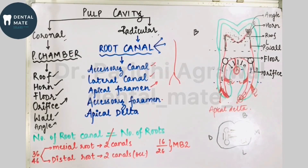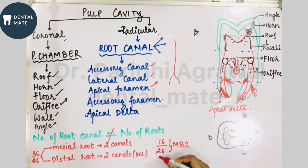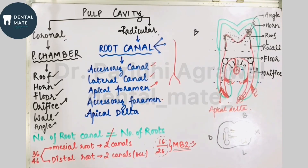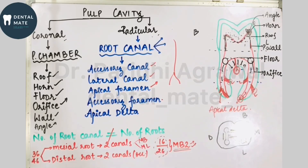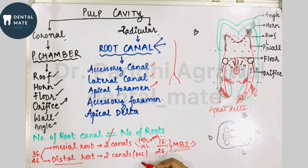Generally, the number of root canals is equivalent to the number of roots, but there are exceptions. In the maxillary first molar, the mesio-buccal root has a second canal called MB2, which is very important in root canal treatment. In the mandibular first molar, the mesial root has two canals — mesio-buccal and mesio-lingual — and the distal root can also sometimes have two canals: disto-buccal and disto-lingual.